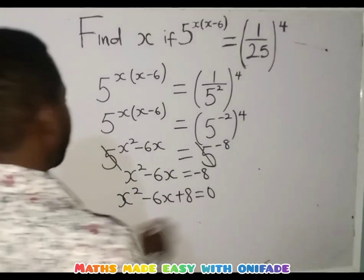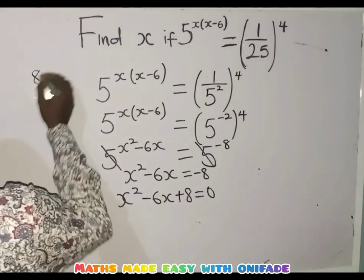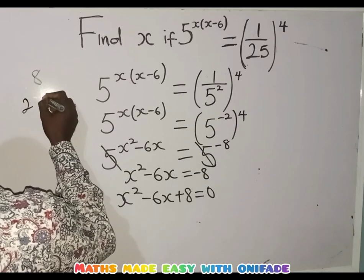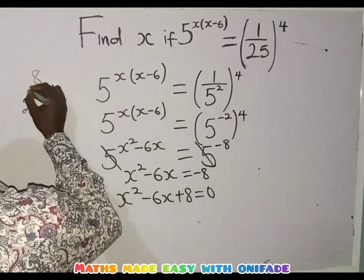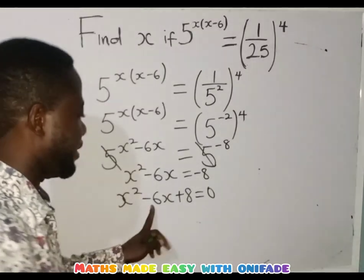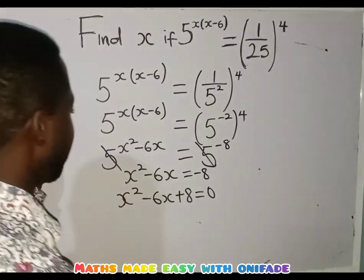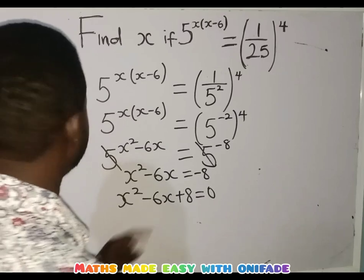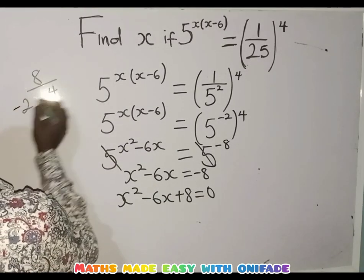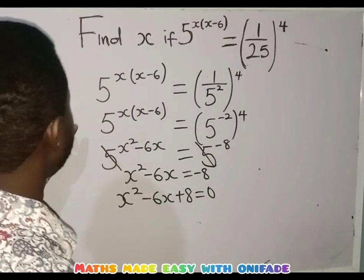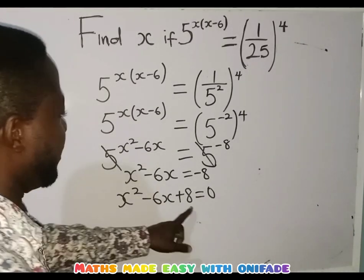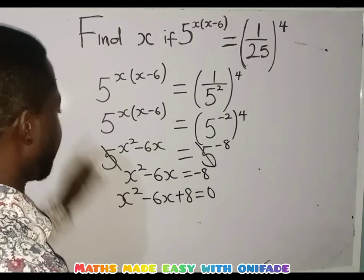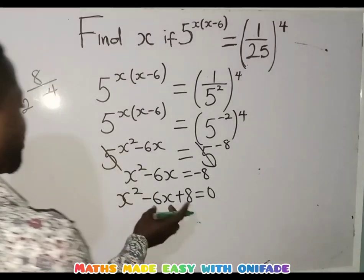In order to do that, I am going to look for the factors of 8. The factors of 8 that I am going to use, I am going to consider 2 and 4. But don't forget, we have minus 6 here. So when I multiply them I must have plus 8, and when I add them I must have minus 6. So in that case, I am going to use minus 2 and minus 4. Minus 2 times minus 4 will give me plus 8, and minus 2 plus minus 4 will give me minus 6.